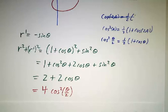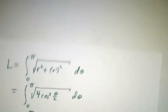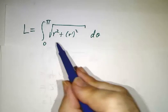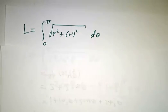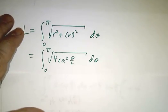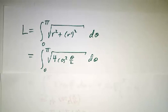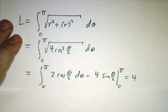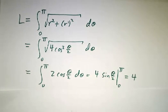And the nice thing about 4 cos squared is it's easy to take the square root of that. So what we want is we want to have the integral from 0 to π of the square root of r squared plus r' squared. And that's the square root of 4 cos squared θ over 2. And that's twice cos θ over 2.